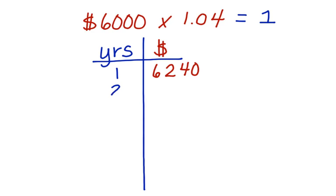Now we're going to do the same thing for year two, except this time we're going to start with the amount of money Marco has in year one. So we're going to take $6,240 times 1.04. That's going to give us the amount of money in year two.